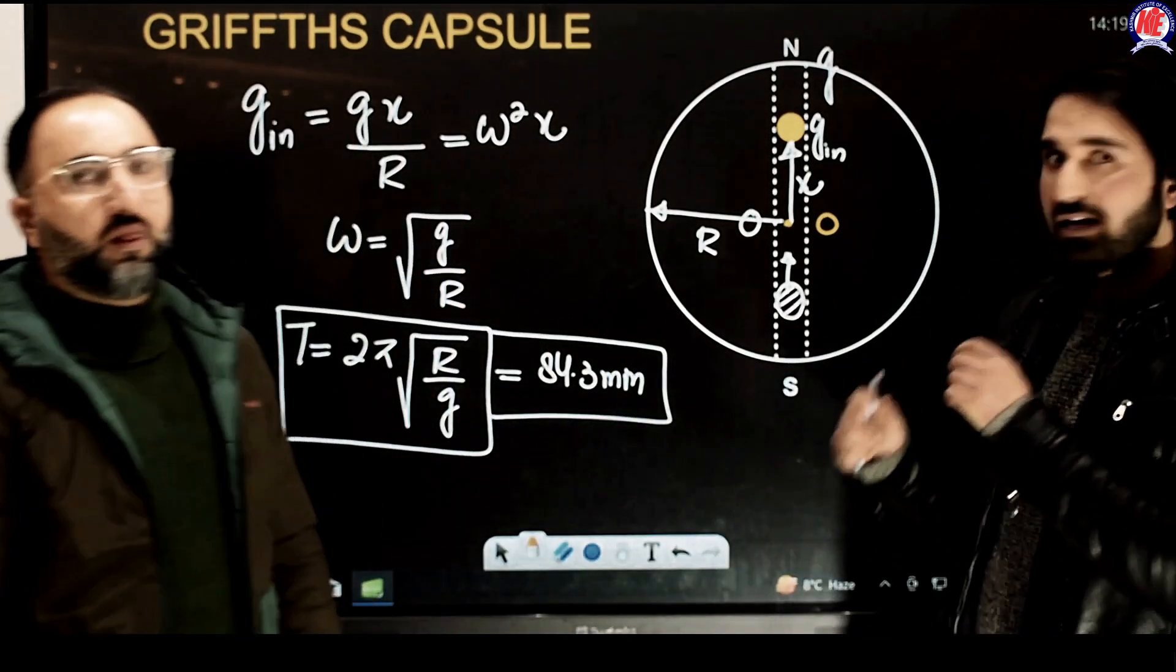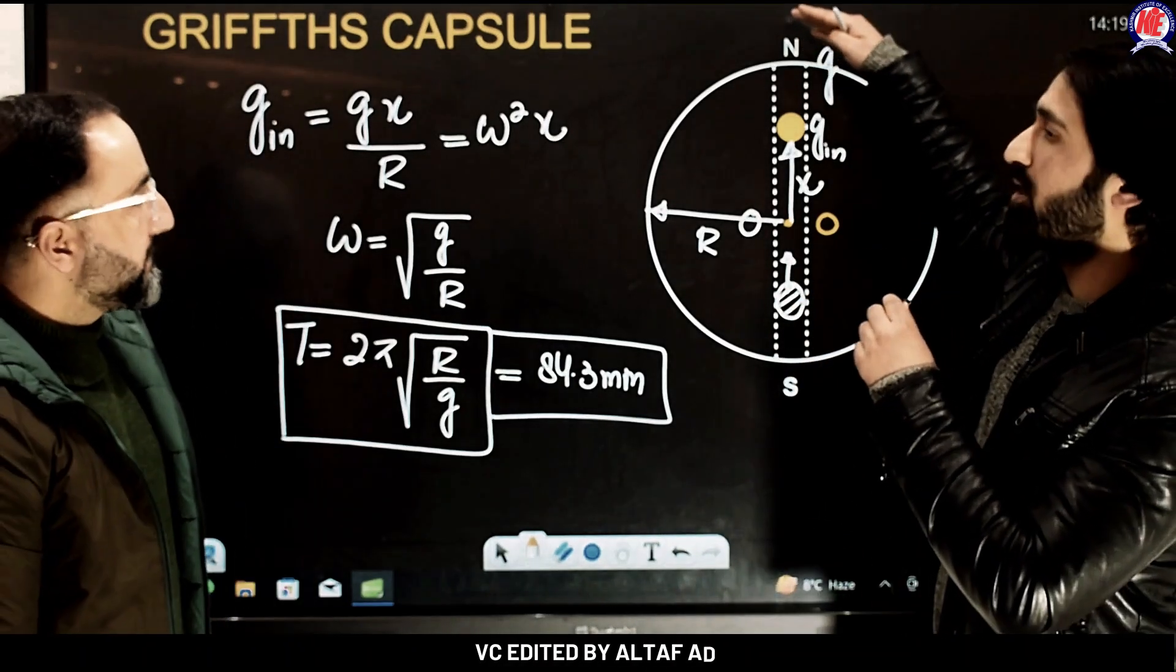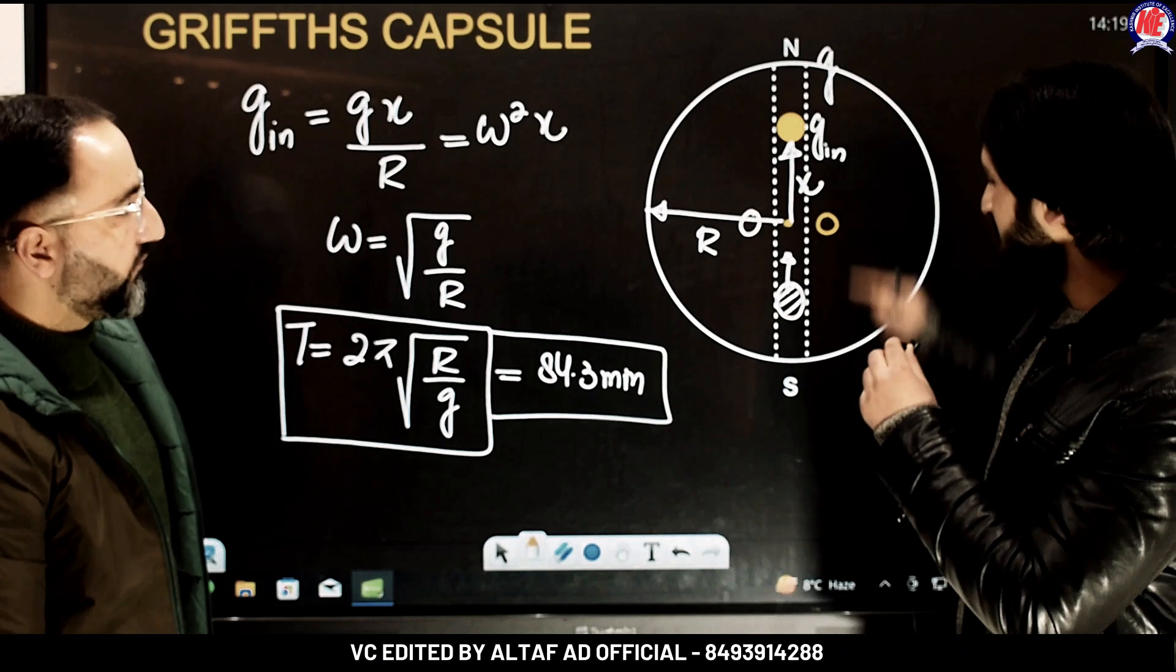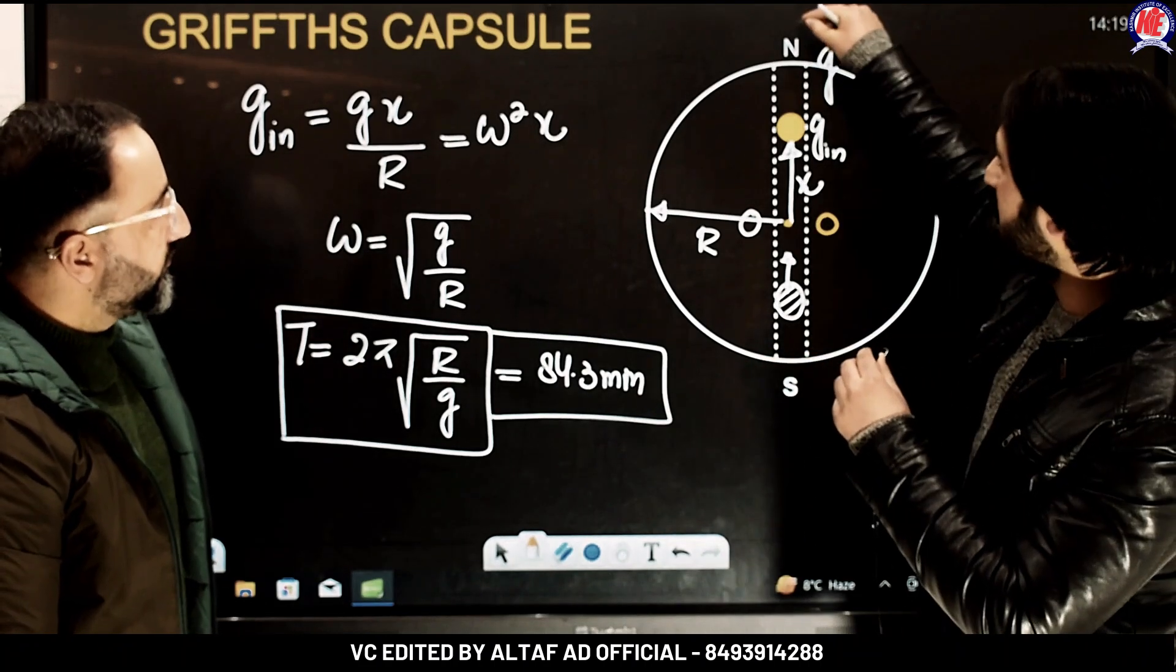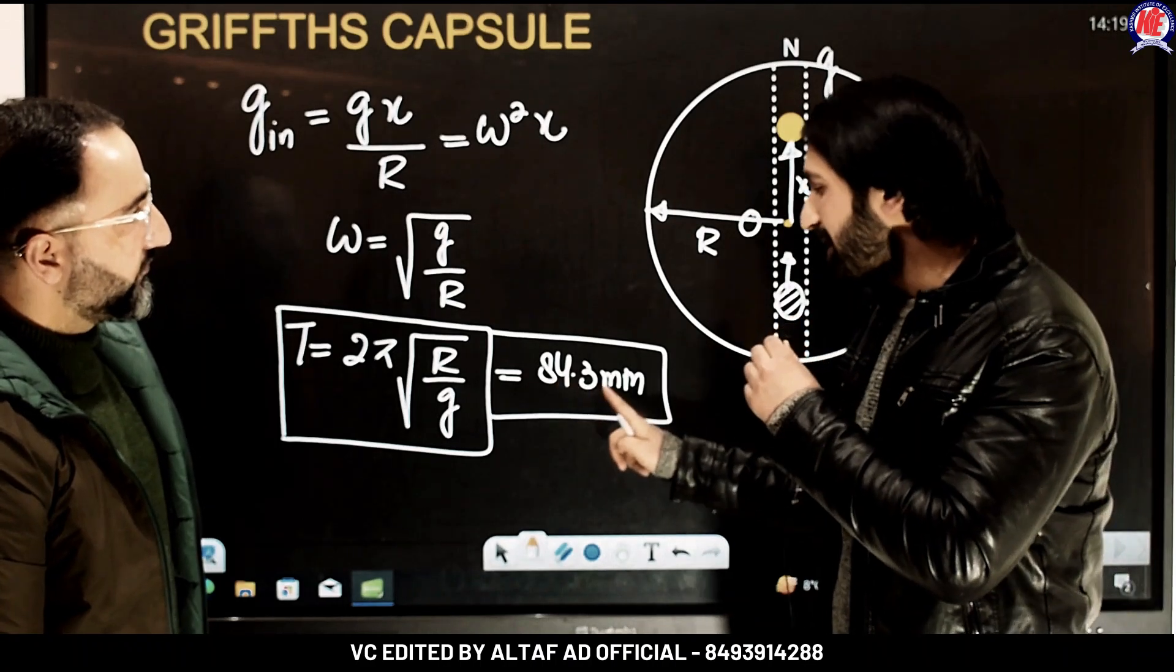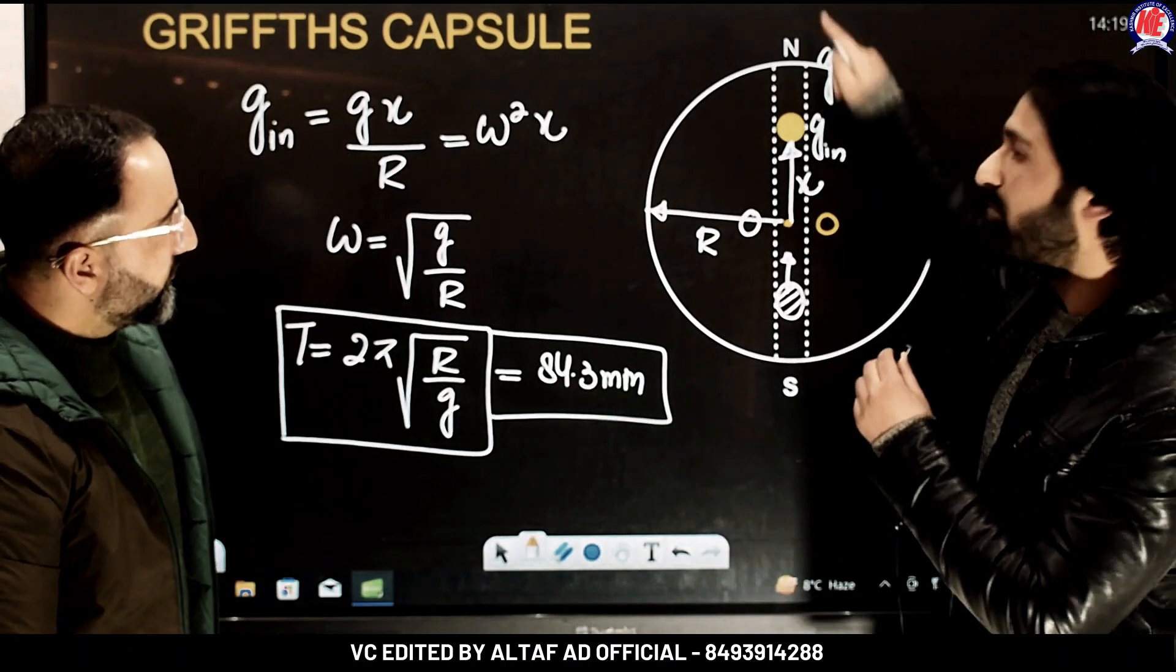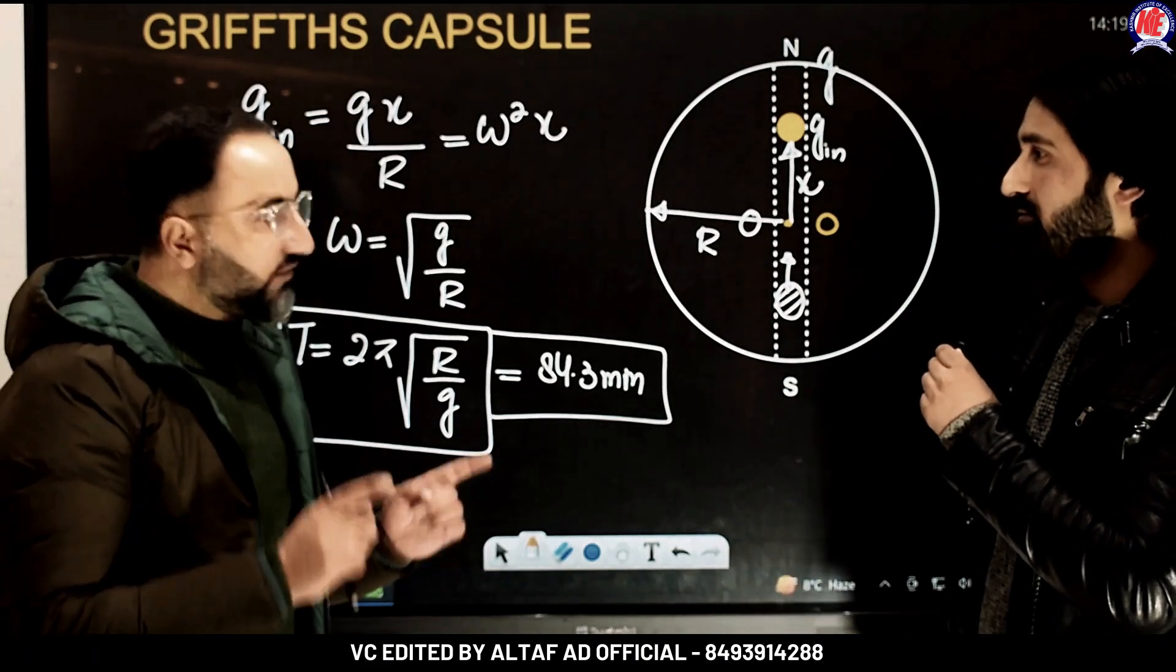So since we calculated this, it means that if I drop a particle from the North Pole, say Arctic Circle, and somehow by geography, we know that this has to be the Antarctica. So if I drop a particle from here to here, it will take me around 84.3 minutes to reach from here to here to complete one cycle and back. Exactly. From North Pole to South Pole, it will take like 42 minutes.